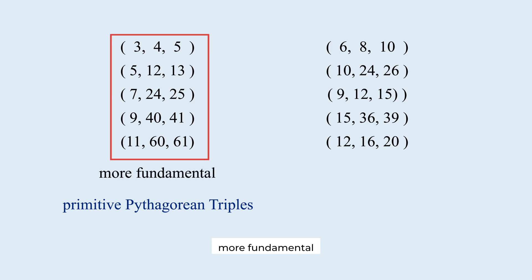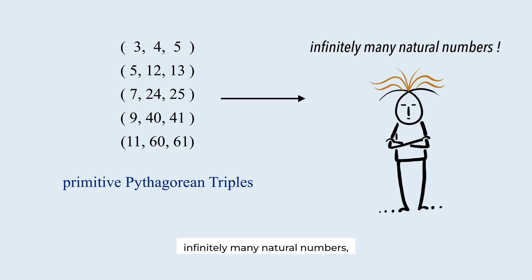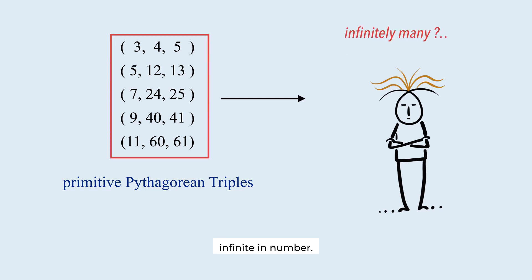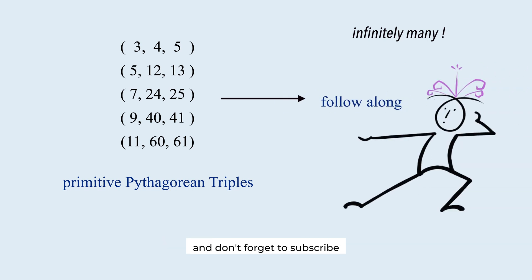They are considered more fundamental because all the other triples can be derived from them through scaling. Are there infinitely many such triples? Since there are infinitely many natural numbers, it seems that these triples are also infinite in number. Indeed, that's correct. But can you prove that? If not, stay with me. I'll guide you through a complete and elegant proof. Follow along carefully and don't forget to subscribe for the next Math of Travel.